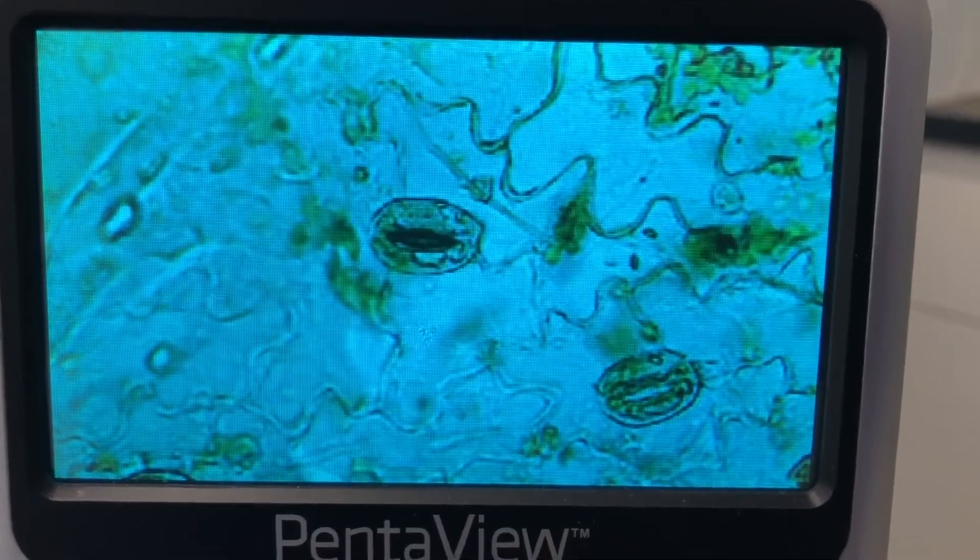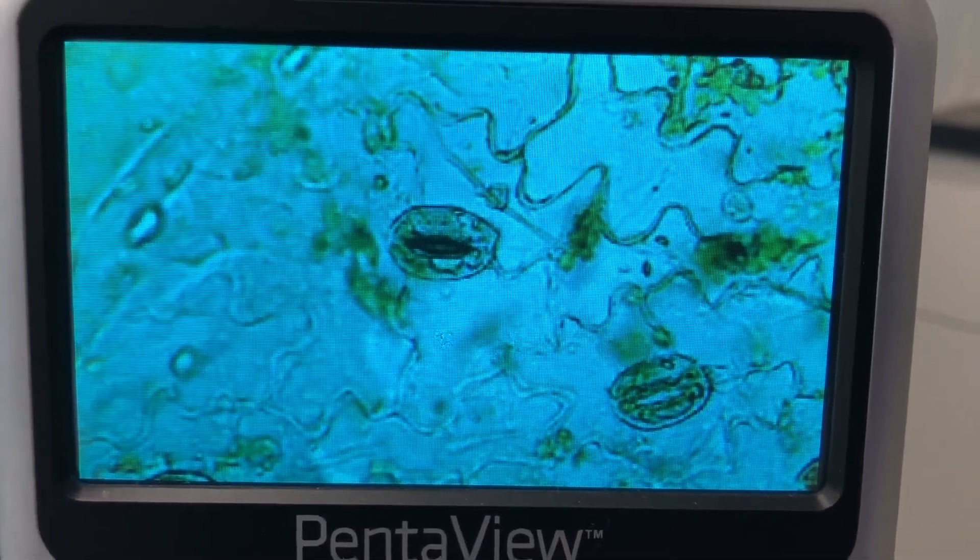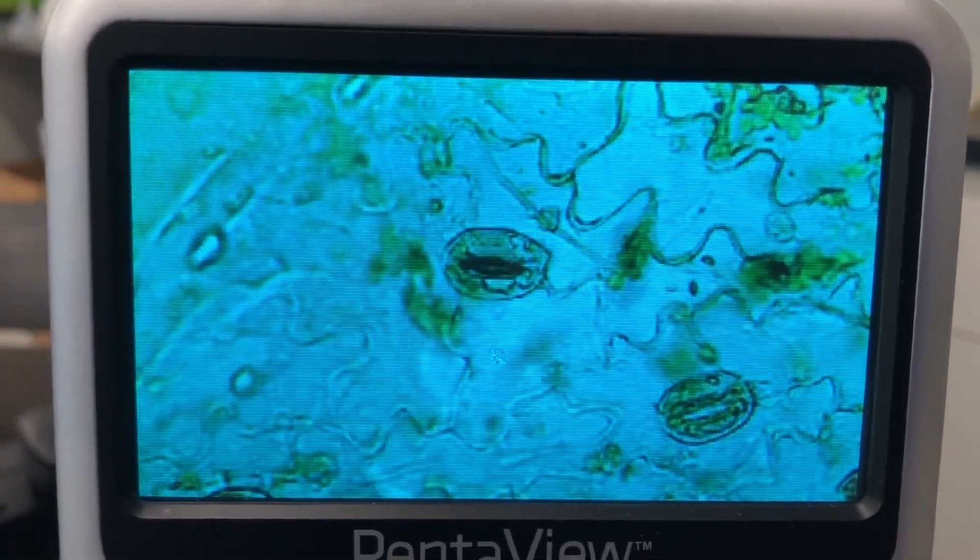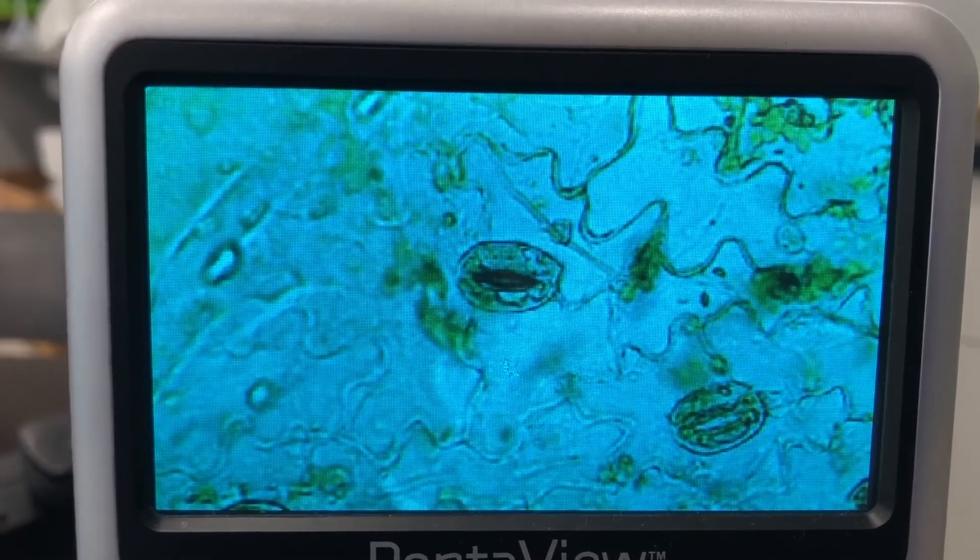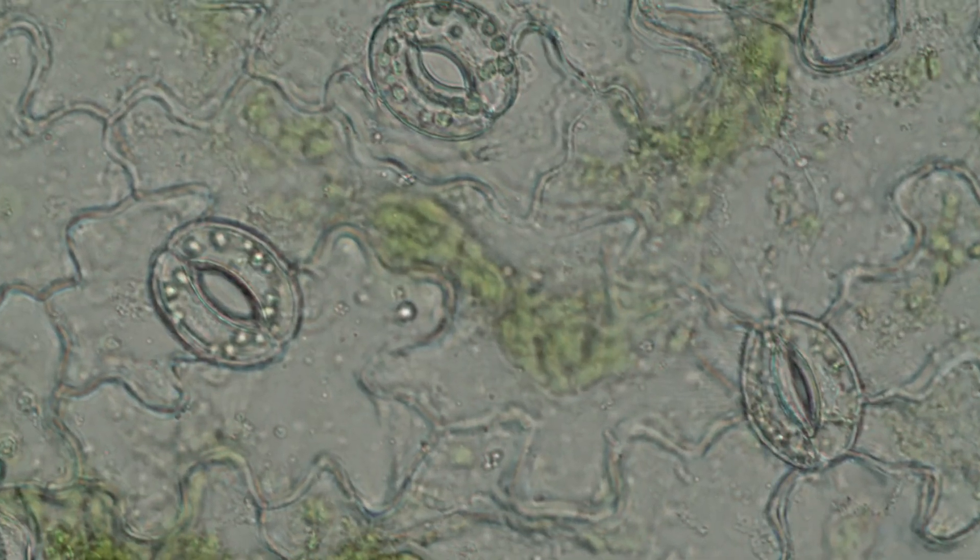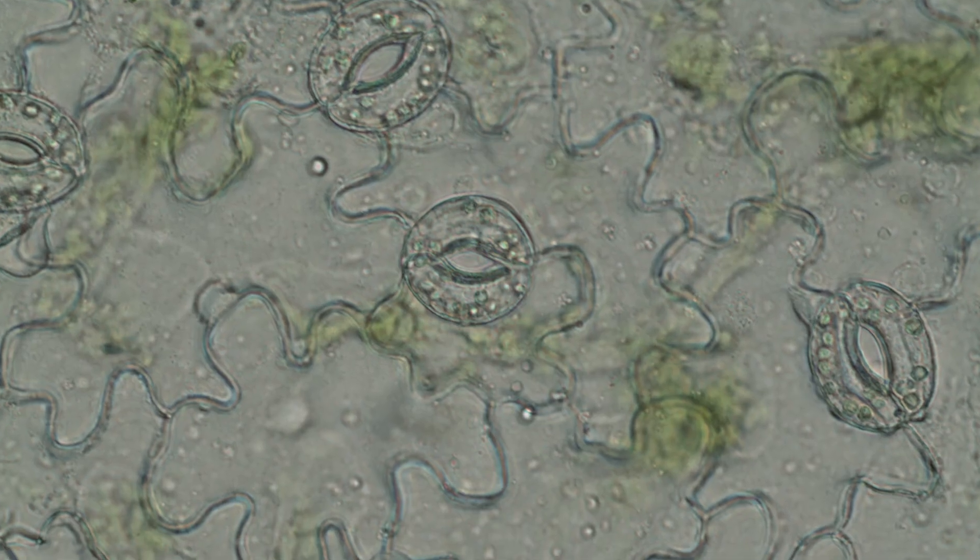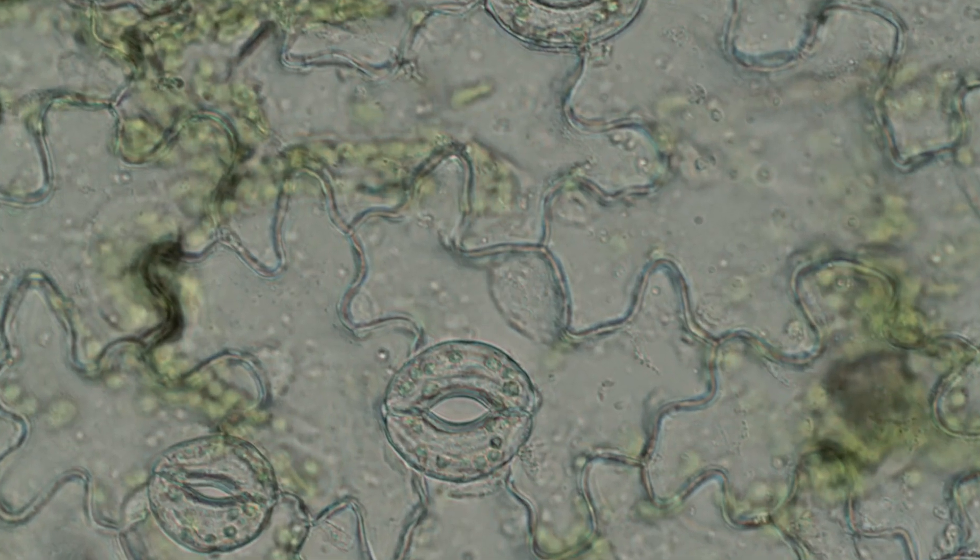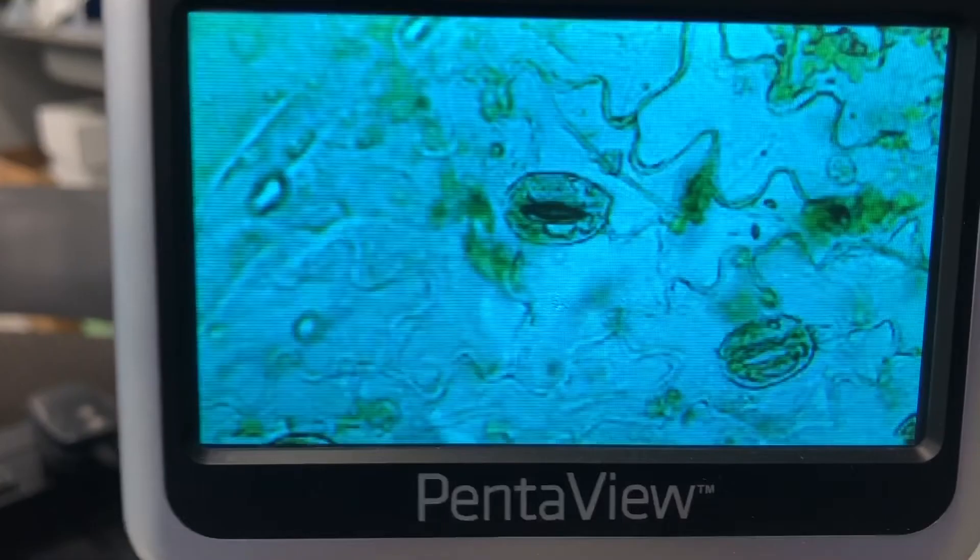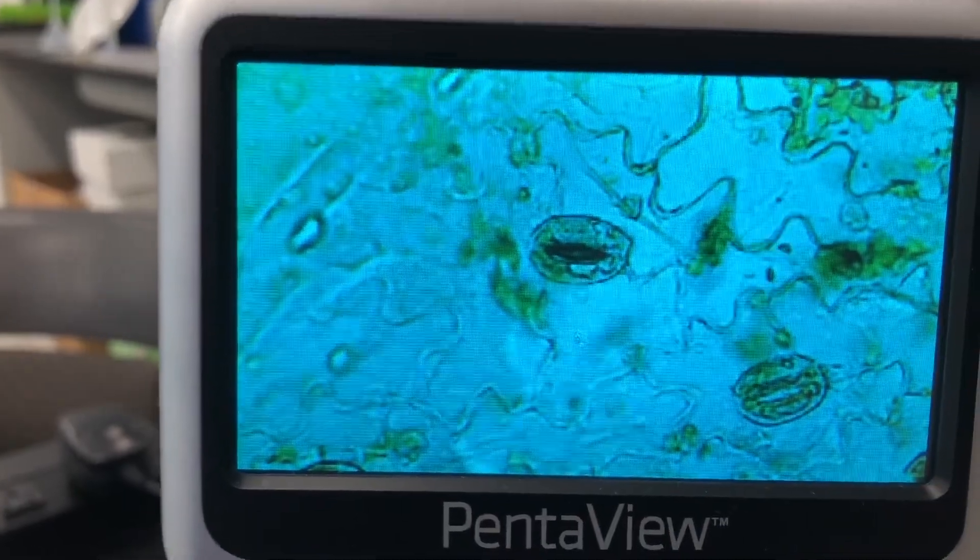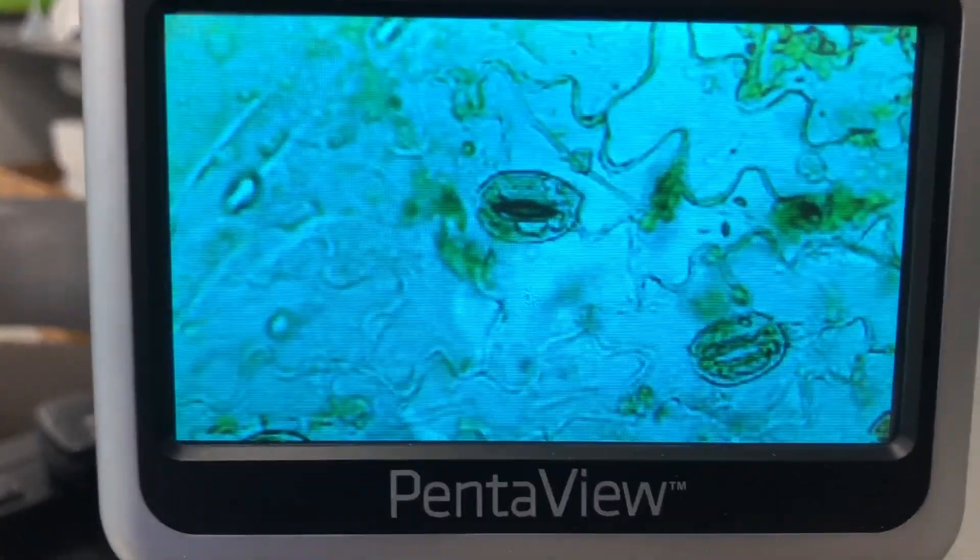Alright, so we're looking at our sample at about 200x here. Remember to start at your lowest power objective first to find a good section. You want to make sure you find a section that doesn't have any air bubbles and doesn't have too much dark green on it, because you won't be able to see anything once you get a little closer. Then I went up to 100x, and when I see these sort of puzzle piece formations, those are the cells that surround the guard cells. I was able to see my guard cells, so now I am at 200x and I can see these Vicia faba stomata. The stomata looks almost closed on this one here, and this one is all the way closed. This is the end of the day and my plants have not been watered today.